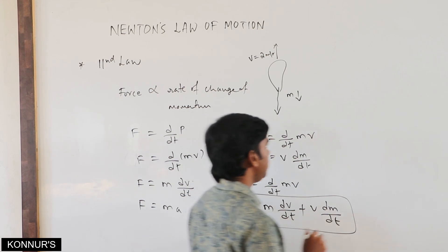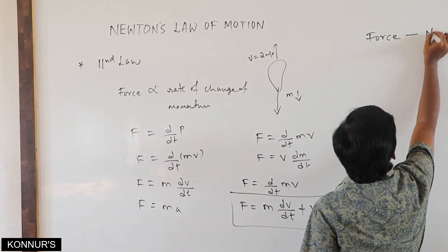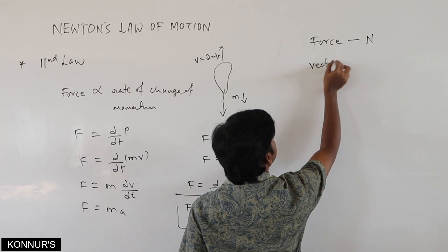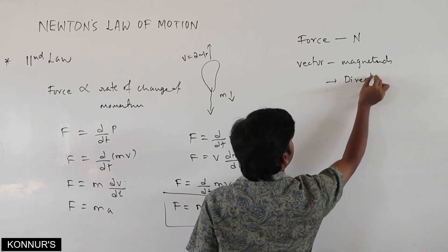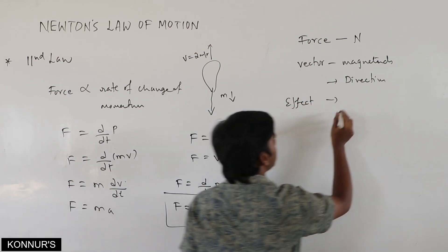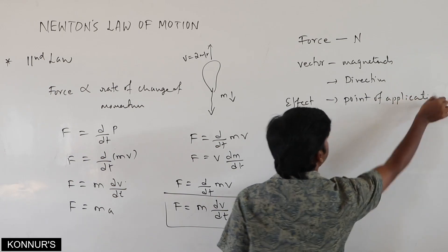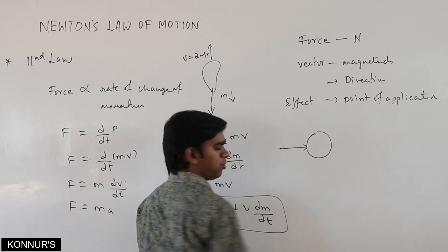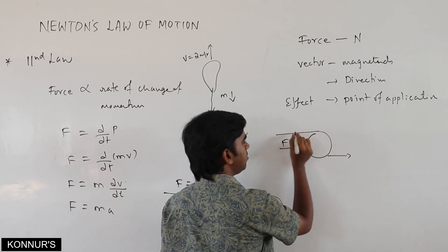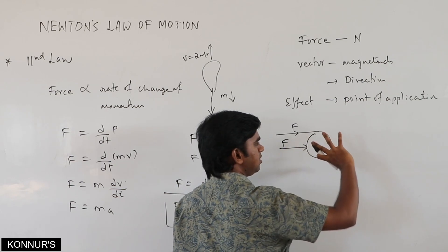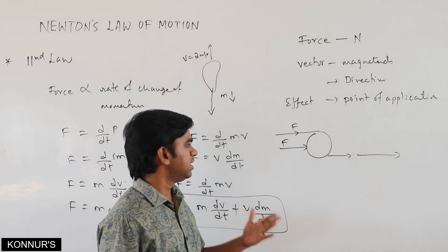Force is a vector quantity with unit Newton, depending on magnitude and direction. Its effect also depends on the point of application — this is very important. Suppose you have a sphere: if you apply force at one point the effect is very less and it may move only a little. If you change the point of application, the sphere will roll and travel a longer distance. In both cases the effect is different.